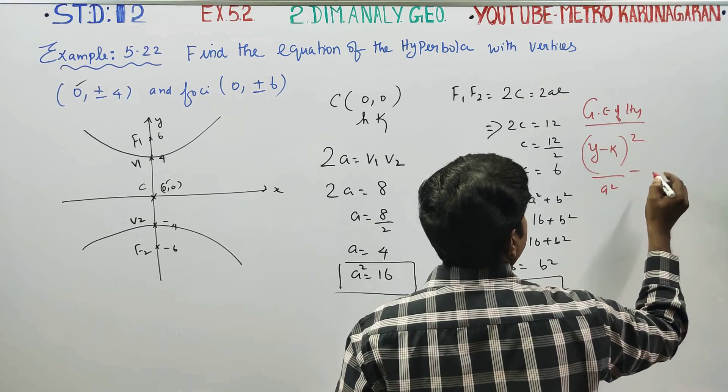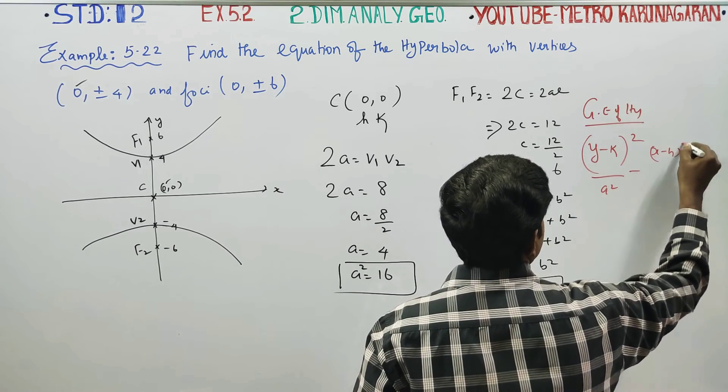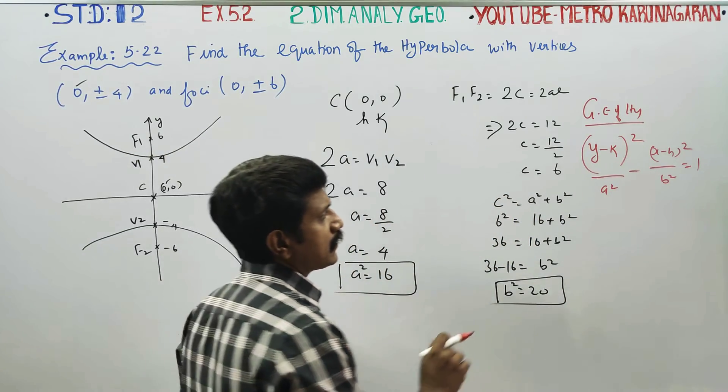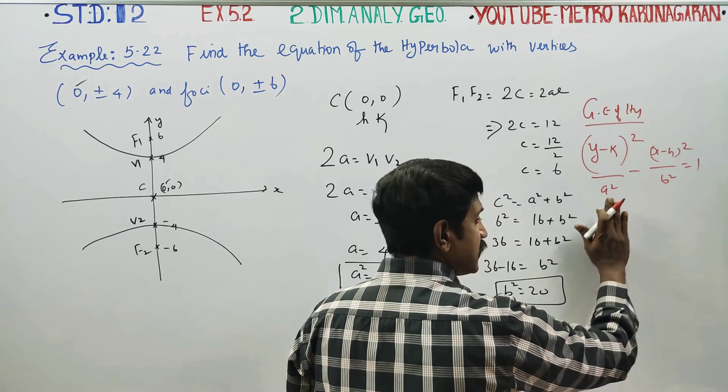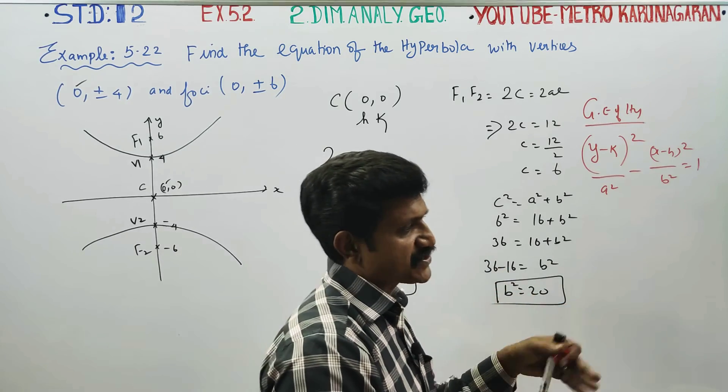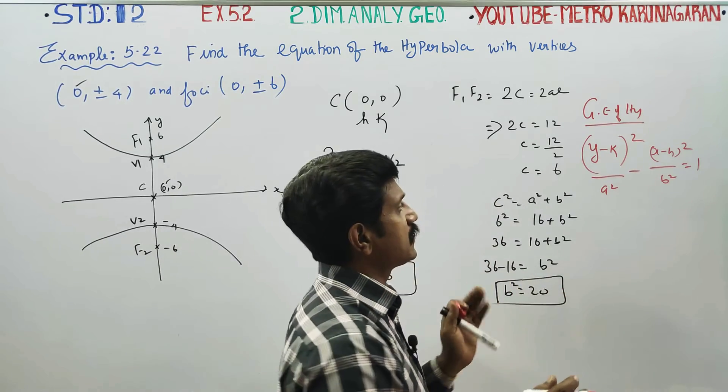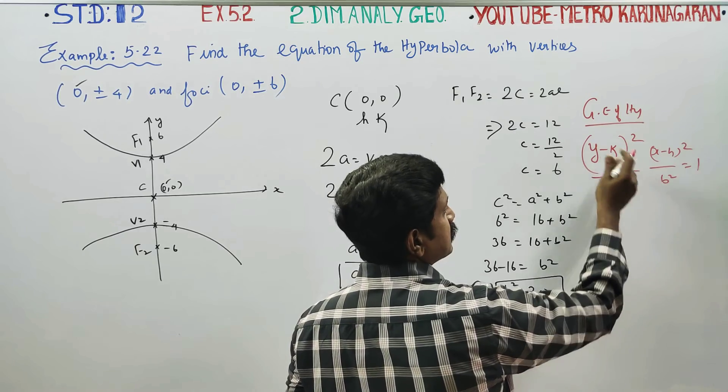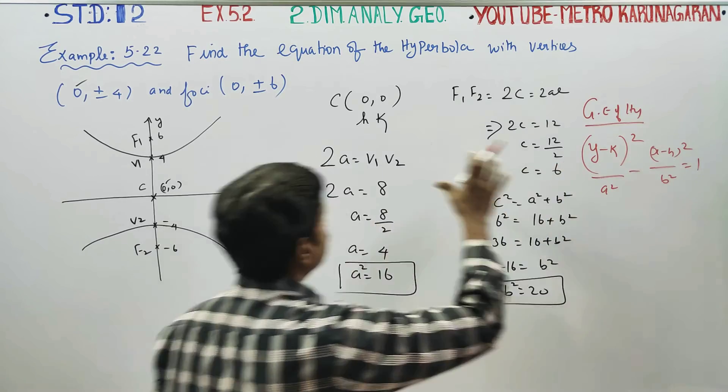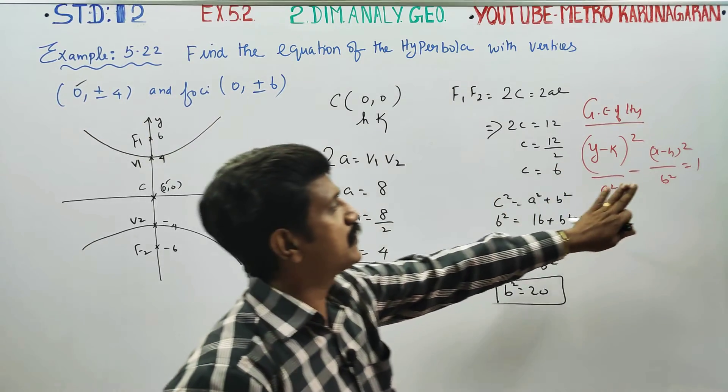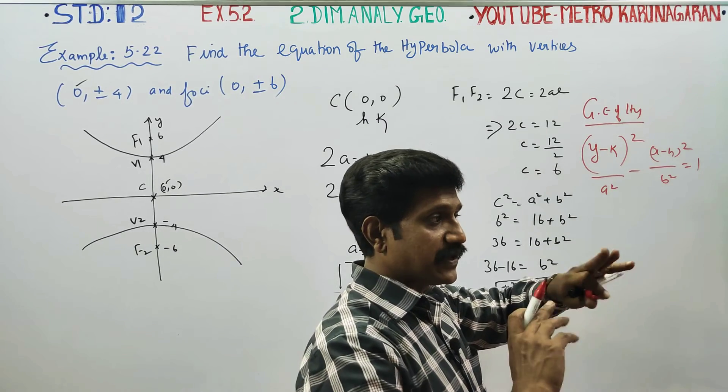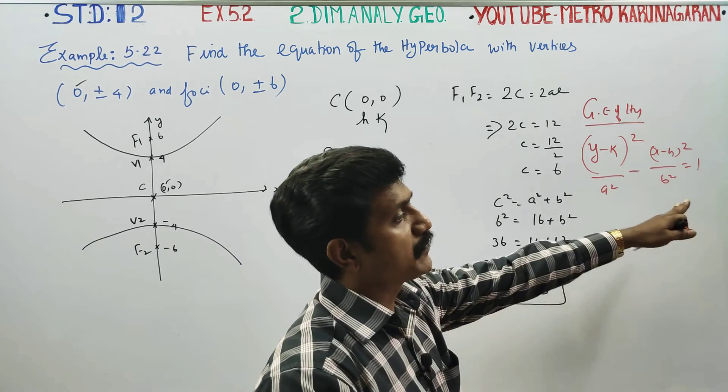That is the general form: y minus k whole square by a square minus x minus h whole square by b square is equal to 1. This is the general formula. For hyperbola, the first term has the larger denominator along that axis.